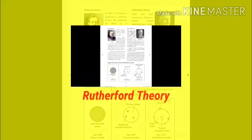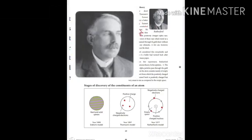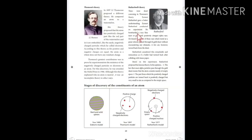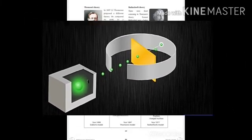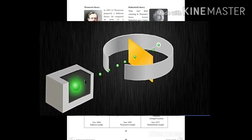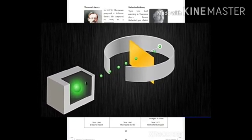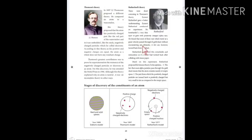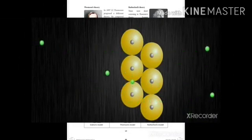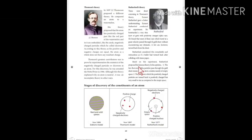There were shortcomings in Thomson's theory, so Ernest Rutherford gave a better understanding. Rutherford conducted an experiment in which he bombarded a very thin layer of gold with positively charged alpha particles. He found that most of these particles, travelling at great velocity, passed through the gold sheet without encountering any obstacles. However, a few particles were turned back from the sheet — Rutherford considered this as remarkable as if a bullet had turned back after colliding with tissue paper.